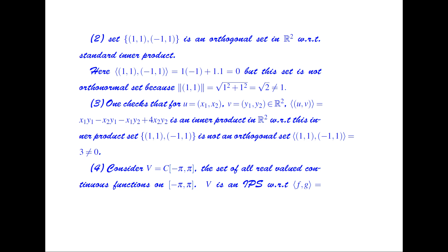One can check that for u = (x1, x2) and v = (y1, y2) in R^2, the inner product defined as x1·y1 - x2·y1 - x1·y2 + 4·x2·y2 is an inner product in R^2. With respect to this inner product, the set {(1,1), (-1,1)} is not even an orthogonal set, because the inner product of (1,1) and (-1,1) equals 3, which is not 0. So we must be careful about which inner product we use when determining orthogonality.